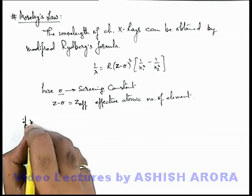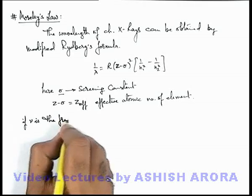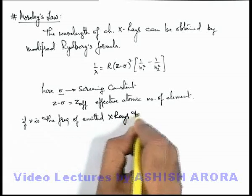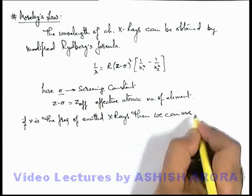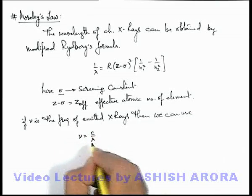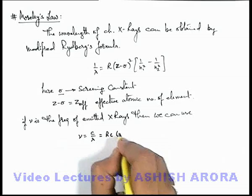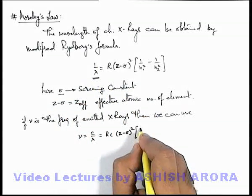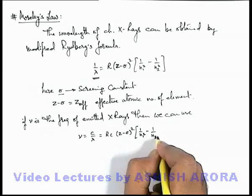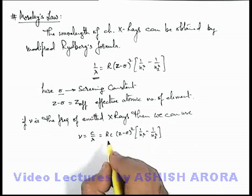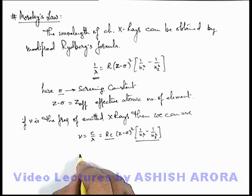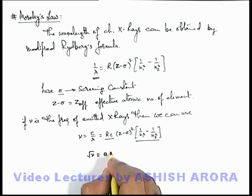If ν is the frequency of the emitted X-rays, then we can write frequency ν as c/λ. Substituting the value of 1/λ (the wave number), this becomes: ν = Rc(Z − σ)² × (1/n₁² − 1/n₂²). Taking the square root, we can write: √ν = A(Z − σ).